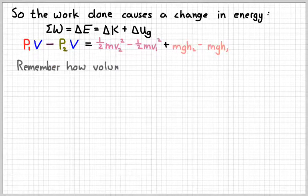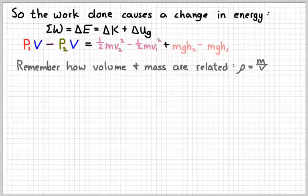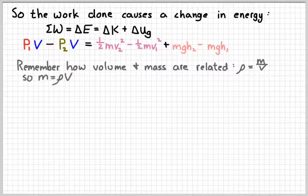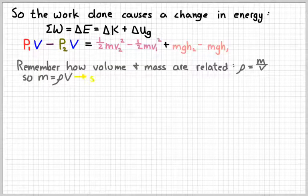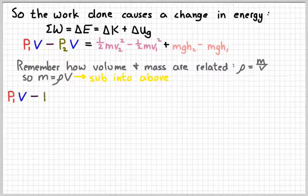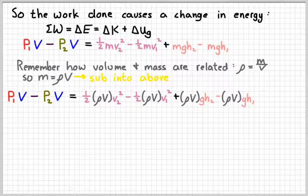Now remember that the mass and volume are related through the density. So it's hard to figure out what the mass of any part of that fluid is because it's moving fluid after all, but the density of that fluid doesn't change. So instead of writing this in terms of mass, let's write it in terms of density. So solving that for mass, you get rho times volume, density times volume. And so let's just substitute that in there wherever we see an m in our equation. And so we get something that looks like P1V minus P2V equals one-half rho V velocity 2 squared minus one-half rho V velocity 1 squared plus rho V gh2 minus rho V gh1.